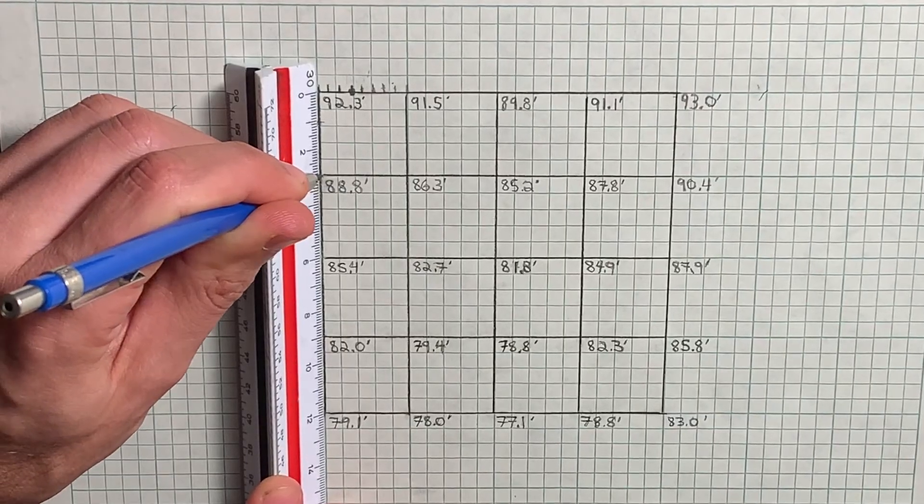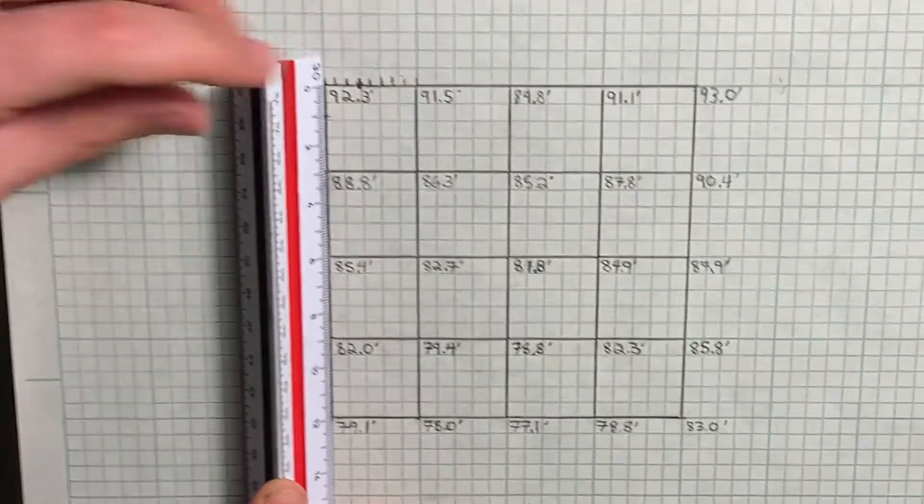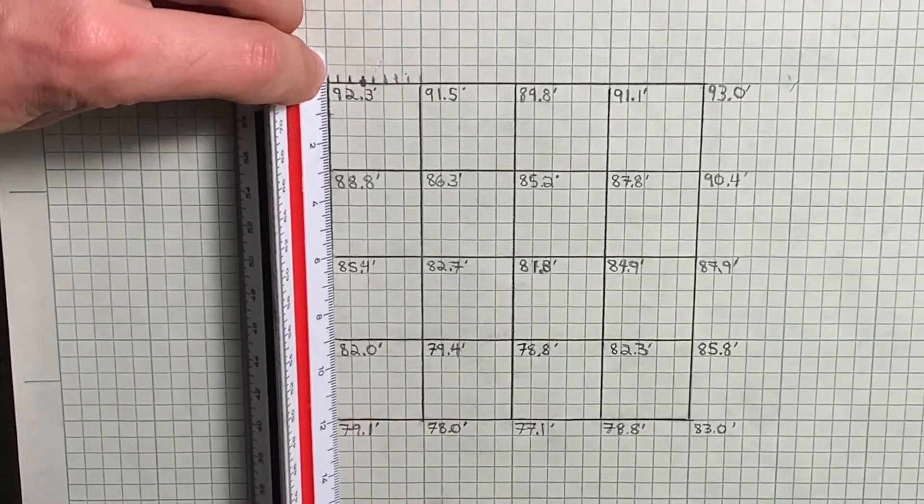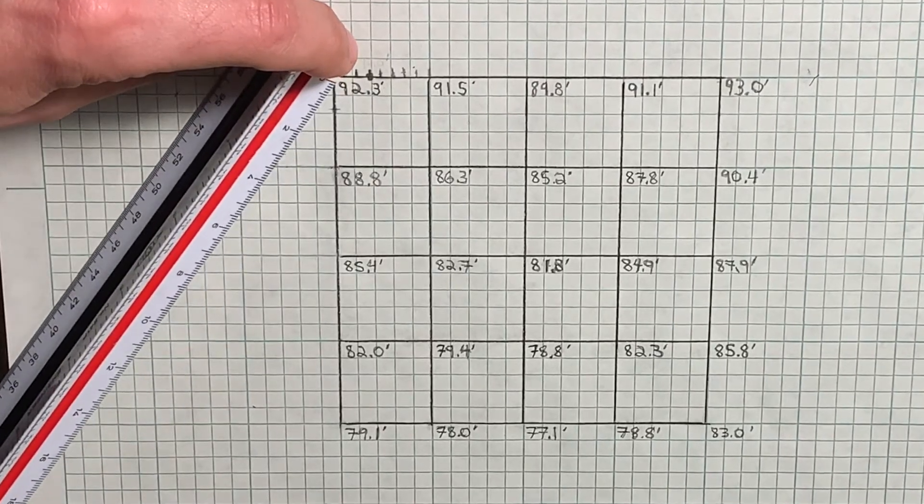This isn't a problem, however, as all we'll have to do is anchor the zero point of the scale to the upper corner of the grid and slowly pivot until we expand the amount of units to 35.